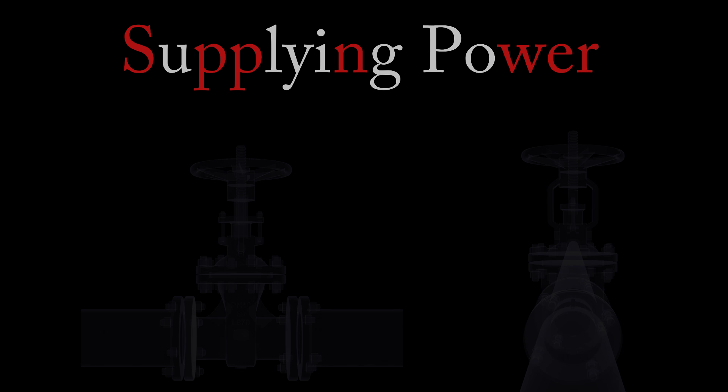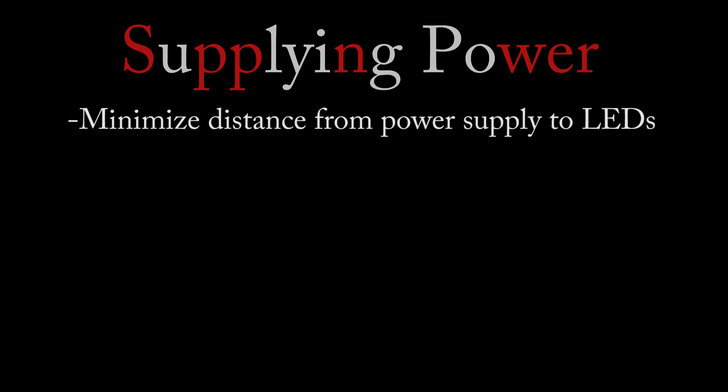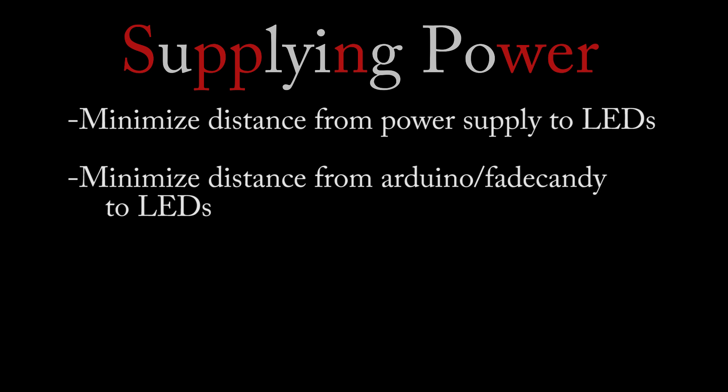If we think of electricity in a wire like water in a pipe, then we can see that resistance is caused by pipe length and pipe diameter. Therefore, if your LEDs are far away from your power supply or if you have many LED strips connected together, then you will most likely experience LED discoloration due to high resistance causing a voltage lower than 5 volts. This phenomena will also occur for the data, which can literally be a light show stopper.